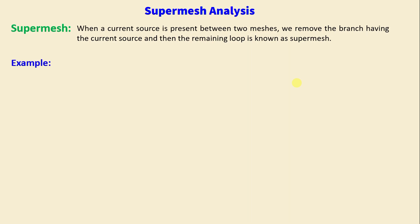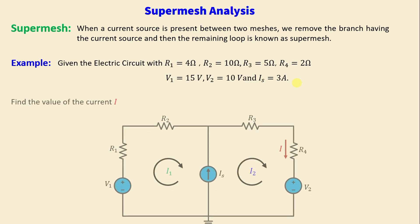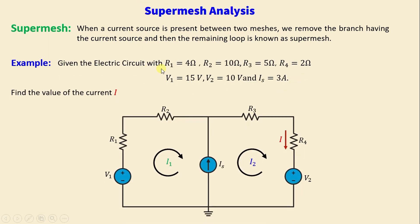Let's move on to the example. Given the electric circuit with R1 equals 4 ohms, R2 equals 10 ohms, R3 equals 5 ohms, and R4 equals 2 ohms. We have two voltage sources: V1 equals 15 volts, V2 equals 10 volts, and the current source is equal to 3 amps. The question now is to find the value of the current I. The current I is the current through the resistor R4.